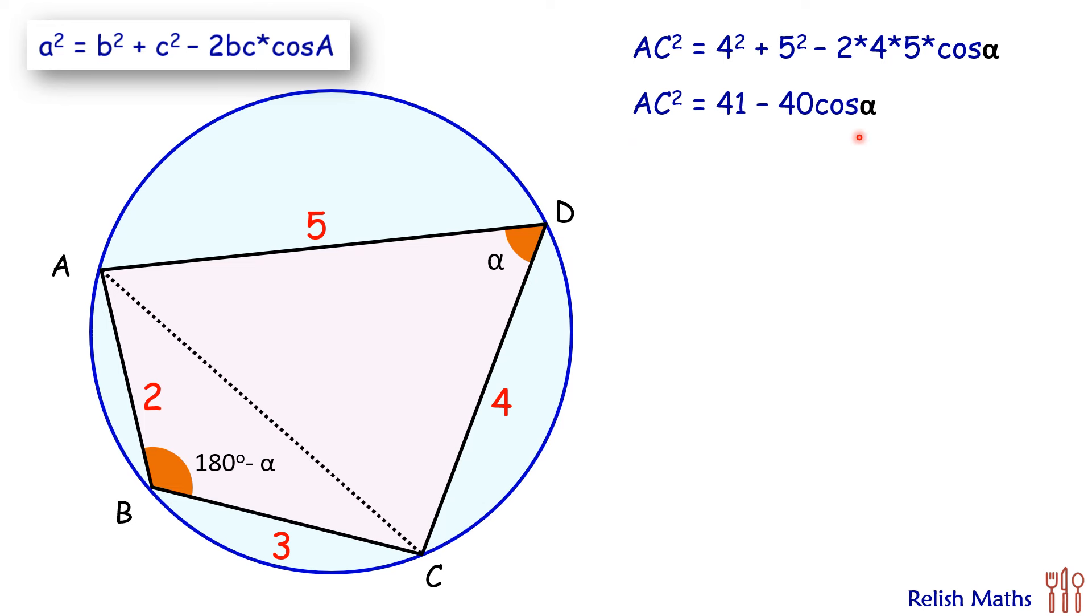Same cosine rule we'll apply in triangle ABC. So here we'll have AC² = 2² + 3² - 2 × 2 × 3 × cos(180° - α). But we know that in trigonometry, cos(180° - α) is nothing but -cos α. Replacing this and simplifying, we'll get AC² = 13 + 12 cos α.